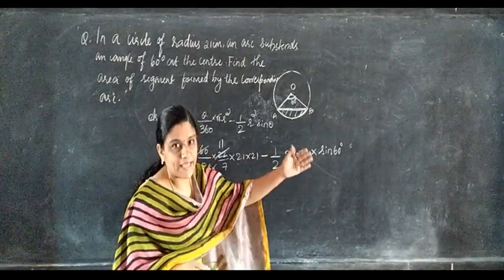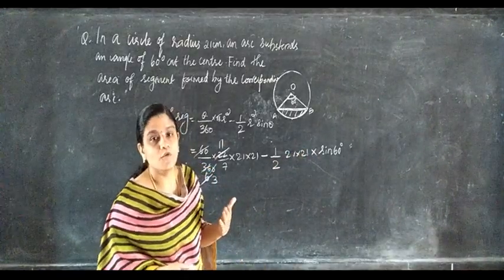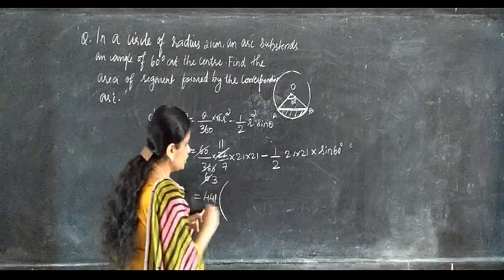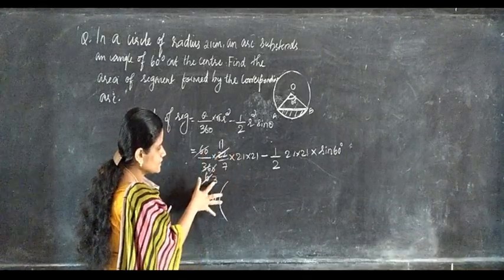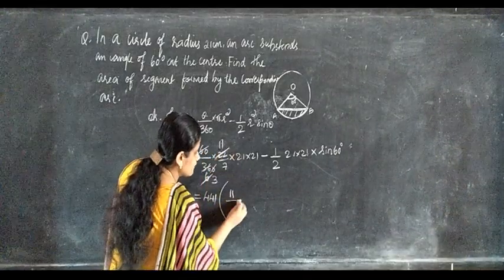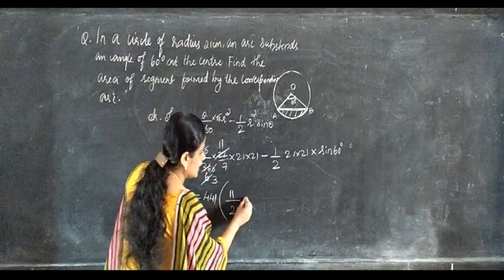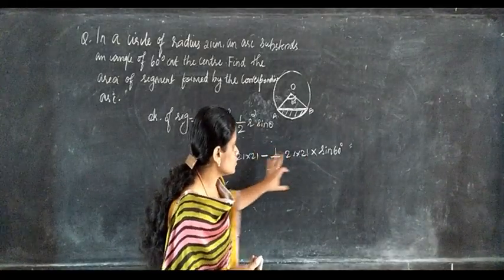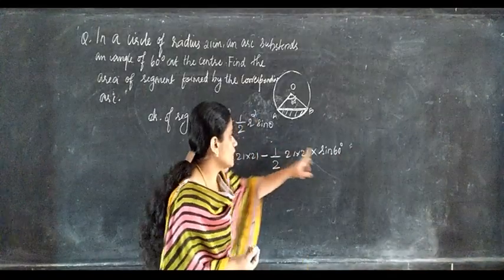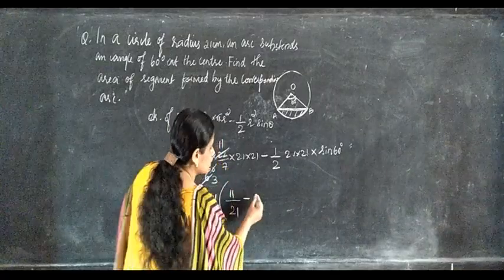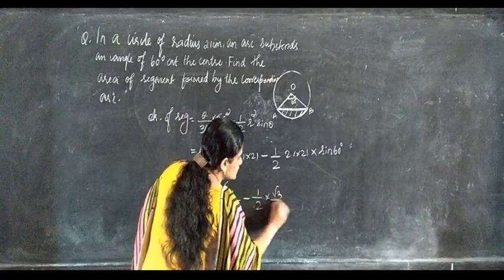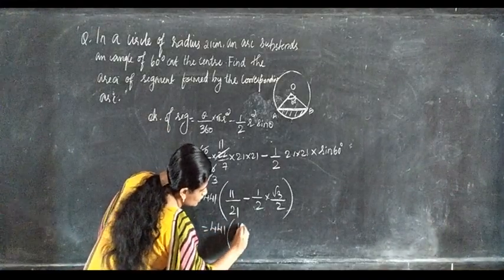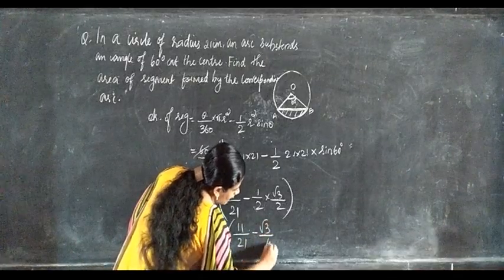21 into 21 is common — that is 441 — we can take that outside. What remains is 11 by 21 minus 1 by 2 into sine 60 degrees. Sine 60 degrees is root 3 by 2, so 1 by 2 into root 3 by 2 gives root 3 by 4. So: 441 into open bracket 11 by 21 minus root 3 by 4 close bracket.